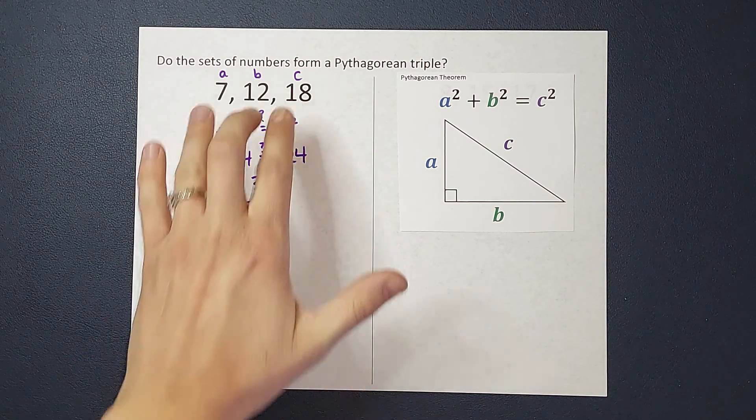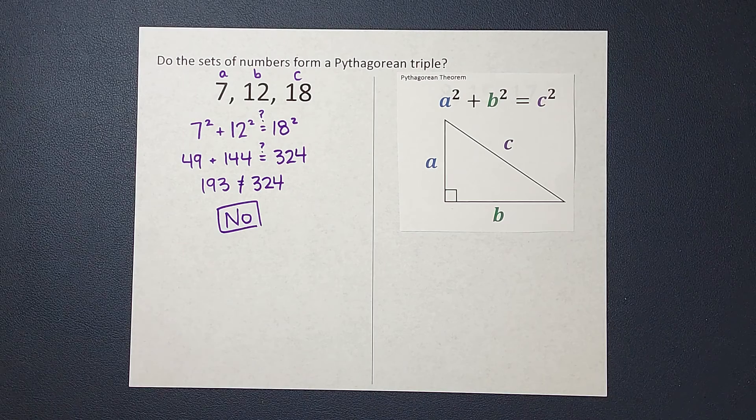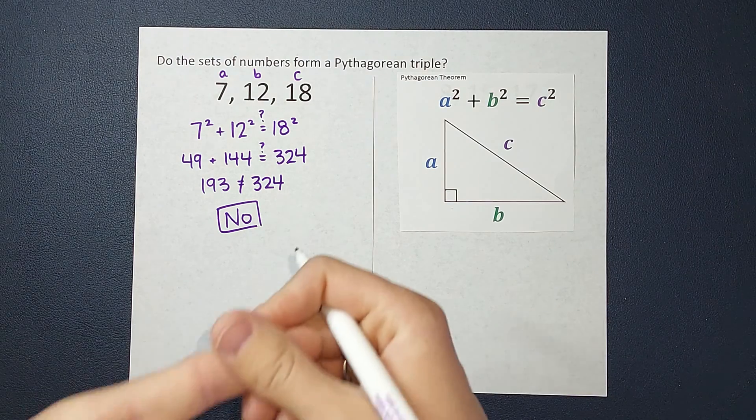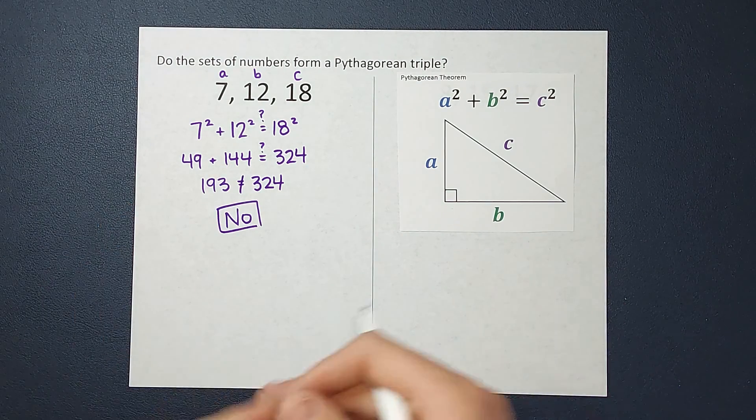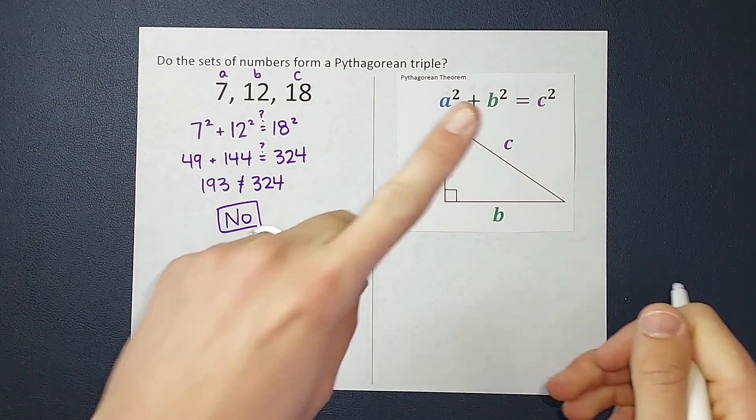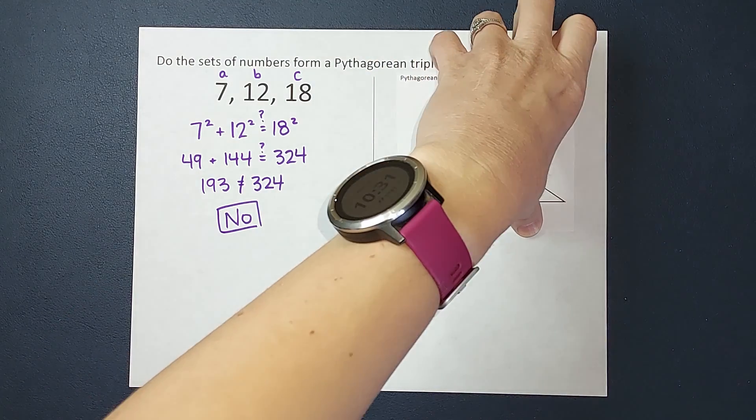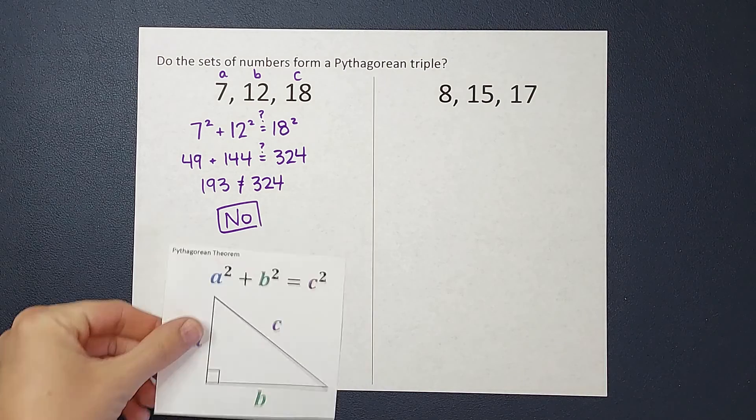Now, this being said, if these are the lengths of a triangle, we know it's not a right triangle, but doing this can help us see if it's an acute triangle or an obtuse triangle, and I'll link a video about that in the corner. Well, let's go ahead and check this one now.